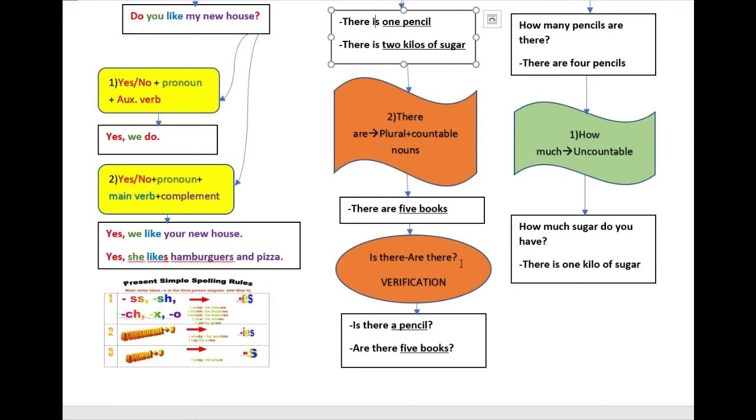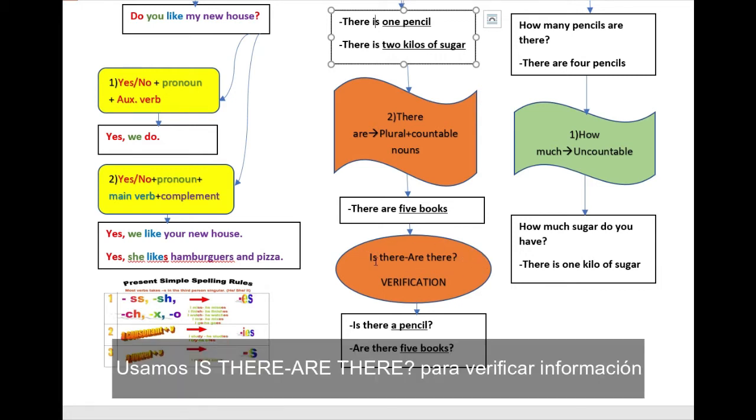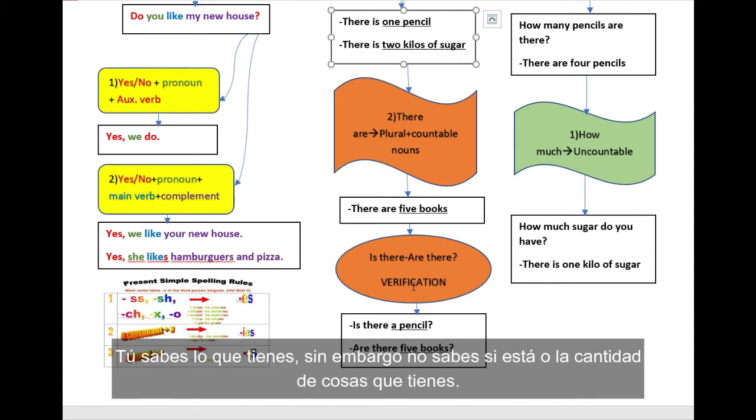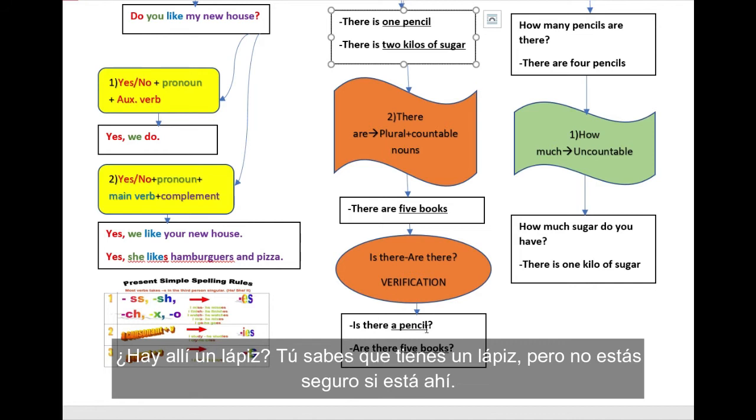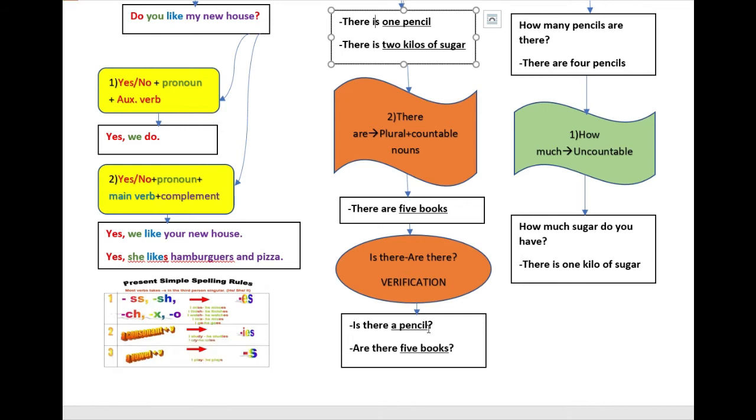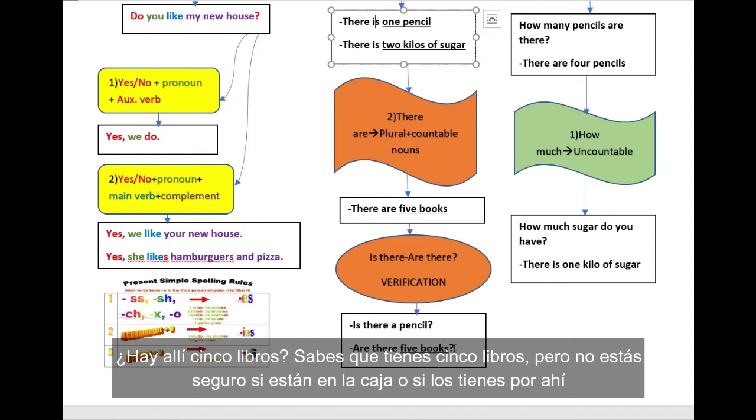Is there, are there? We use this type of questions for verification. You know what you have. However, you are not sure if you have it or the amount of stuff you have. For example, is there a pencil? You know you have a pencil, but you are not sure if it's there. Are there five books? You know you have books, but you are not sure if they are in the box or if they are there.